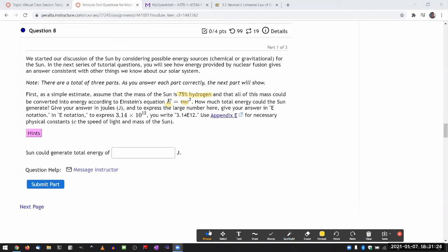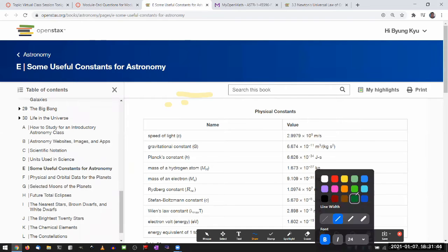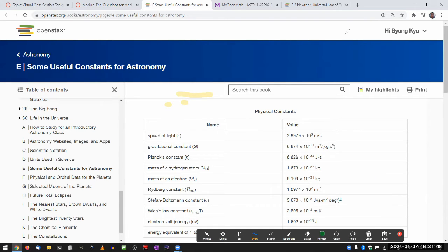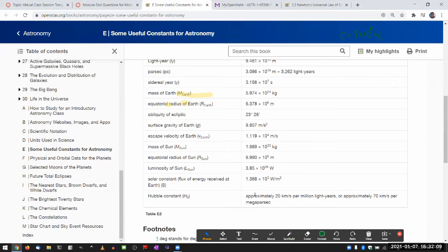So it looks like I will need to go to the appendix E to get the physical constants. Let me do it. So let me do this: c equals 3 times 10 to the 8 meters per second. And I think I need the mass of the sun since that's my starting point for all the calculations. So mass of the sun, let me round that to 2 times 10 to the 30 as well. So mass of the sun is equal to 2 times 10 to the power of 30 kilograms.